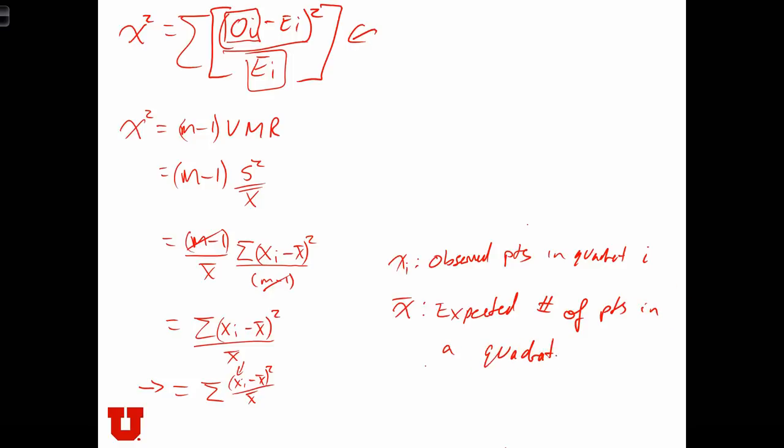Essentially, what we've seen here is that when we multiply VMR times M minus 1, we end up with the chi-squared, where the formula of the chi-squared statistic over here matches exactly with the goodness of fit chi-squared statistic that we learned in the last lecture.